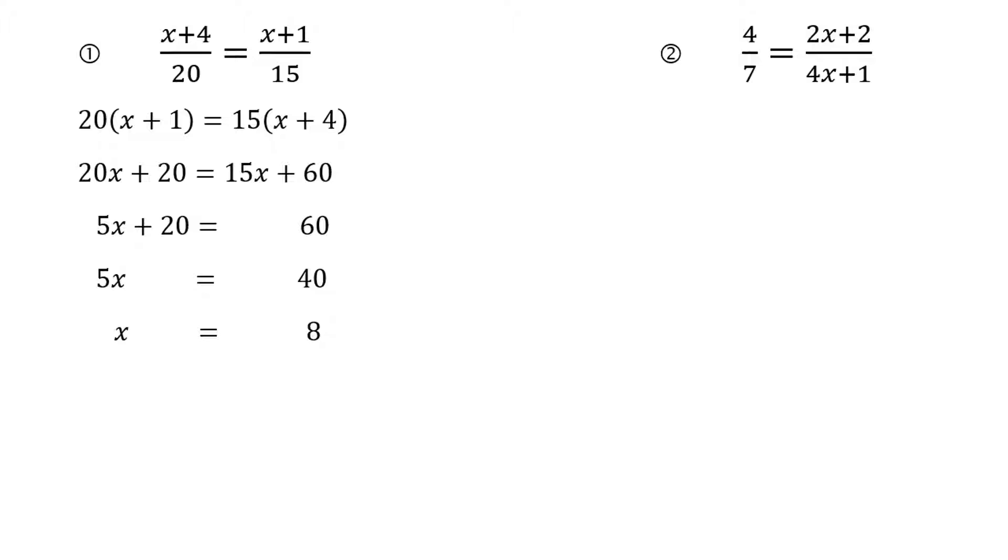Number two, cross multiply, use the distributive property. Subtract 14x from each side. 16x subtract 14x of course would be 2x. Subtract 4 from each side, divide each side by 2.